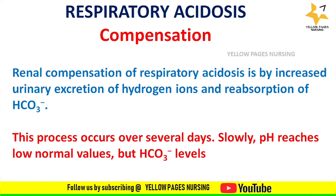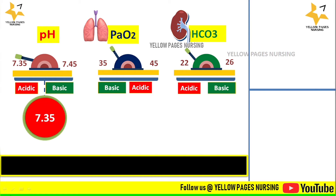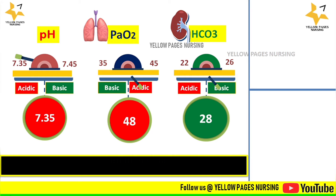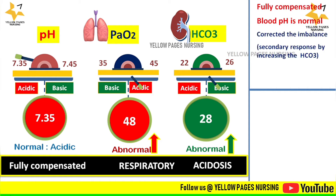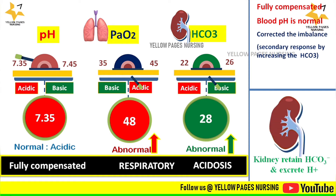In this example, pH is 7.35, PaCO2 is 48, and bicarbonate is 28. pH 7.35 is at the borderline normal value and is considered acidic; PaCO2 of 48 is above normal and also acidic. Because pH has almost reached the normal level, this is called fully compensated respiratory acidosis. In fully compensated respiratory acidosis, blood pH is normal. The secondary response is the kidneys retaining bicarbonate and excreting hydrogen ions, so bicarbonate levels remain increased.